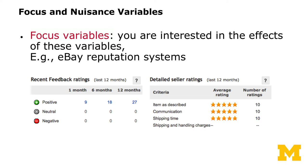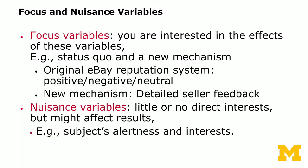In this case, we have the classic feedback system as our control, whereas our treatment is the classic system plus the detailed seller rating. These two are our focus variables. Nuisance variables, in the same context, would be something like subject alertness — if the experiment is too long, subjects get tired and lose interest. These variables have little or no direct interest to the experimenter, but they can affect the results, so you need to be careful in controlling both focus and nuisance variables.